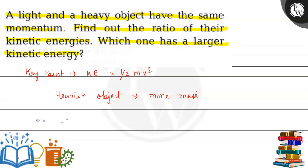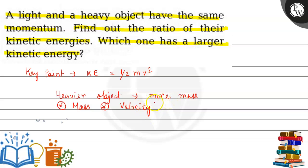In that case, the lighter object must have greater kinetic energy in order to create the same momentum, as compared to the heavier object. Kinetic energy depends on the mass and the velocity squared. So clearly, the kinetic energy of the lighter object is greater than the kinetic energy of the heavier object.